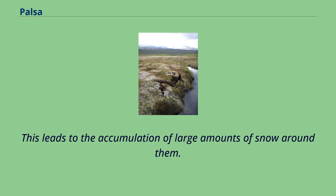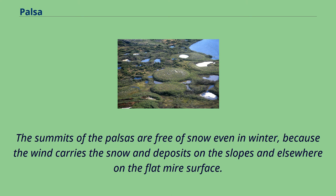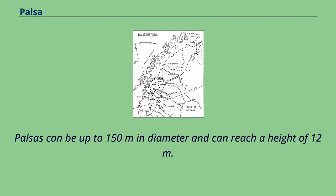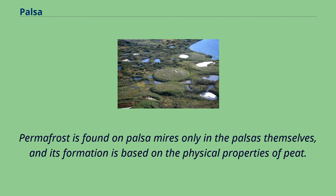This leads to the accumulation of large amounts of snow around them. The summits of the palsas are free of snow even in winter, because the wind carries the snow and deposits it on the slopes and elsewhere on the flat mire surface. Palsas can be up to 150 meters in diameter and can reach a height of 12 meters. Permafrost is found on palsa mires only in the palsas themselves.